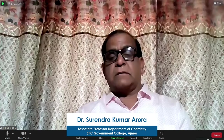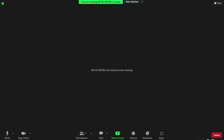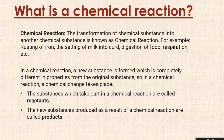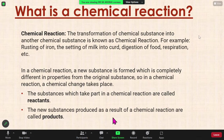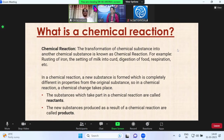What is a chemical reaction? The transformation of chemical substances into another chemical substance is known as a chemical reaction. For example, rusting of iron, the setting of milk into curd, digestion of food, and respiration etc. are examples of chemical reactions.